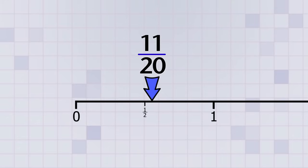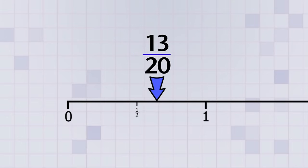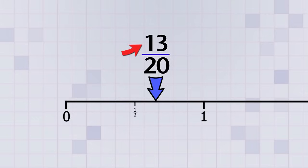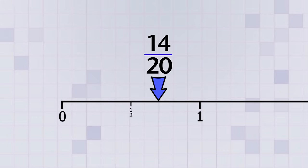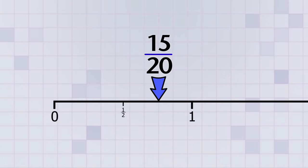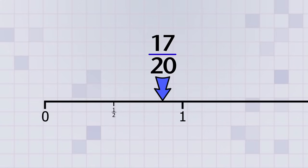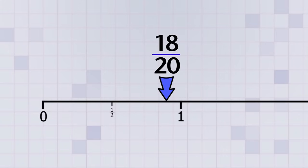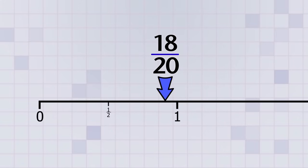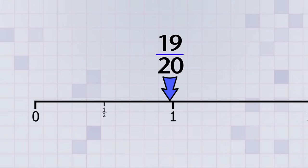So we've passed 1 half now and we're making our way to the number 1. Notice that our top number keeps increasing and it's getting closer and closer to 20. When it reaches 20, we'll have arrived at 1, because 20 over 20 is a whole fraction. Knowing this can also help you estimate a fraction's value. Whenever you see a fraction with a top and bottom number that are almost the same, like 19 over 20, you know that the value is close to 1.